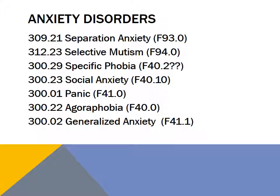In ICD-10, the two DSM-5 diagnoses that are likely to be diagnosed during childhood or adolescence — Separation Anxiety Disorder and Selective Mutism — are in the childhood and adolescence section of ICD-10, while the other five anxiety disorders are in the neurotic section of ICD-10.